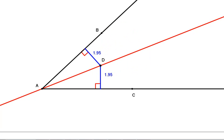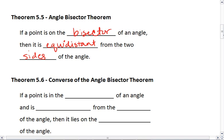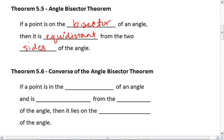We also see something else interesting. And that is Theorem 5.6, which is the converse to the angle bisector theorem, that tells us if a point is in the interior of an angle.